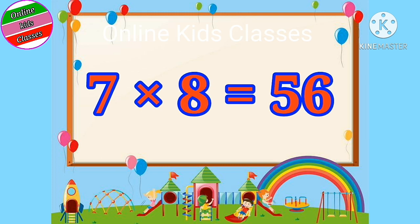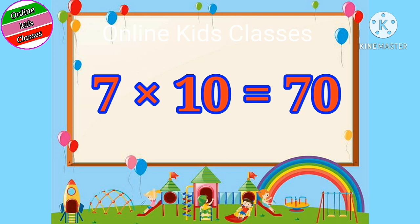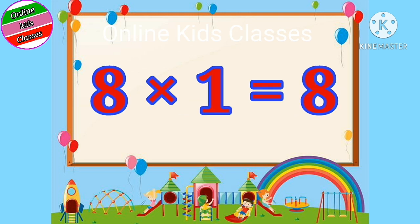Seven eights are fifty-six. Seven nines are sixty-three. Seven tens are seventy.